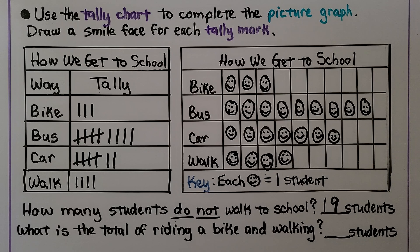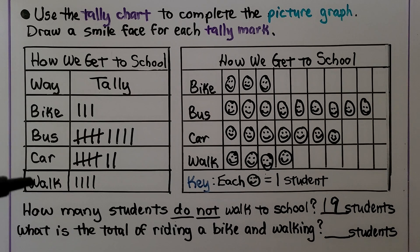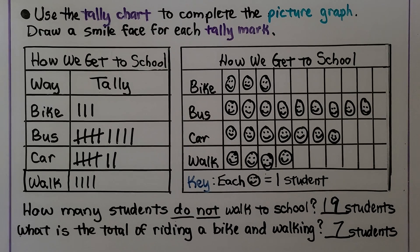The next question is: what is the total of riding a bike and walking? Bike is three and walking is four. Three plus four is seven. We total the two sets of tally marks — the answer is seven students.